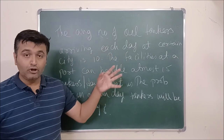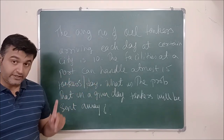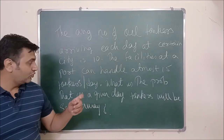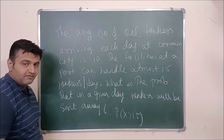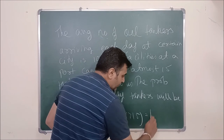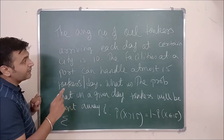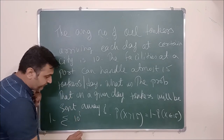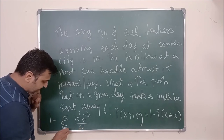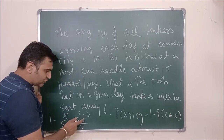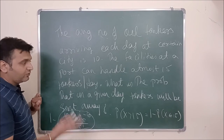Last question: the average number of oil tankers arriving each day at a certain port is 10. The facilities at the port can handle at most 15 tankers per day. What is the probability that on a given day tankers will be sent away? Tankers are sent away only if more than 15 arrive, so we need P(X > 15), which equals 1 minus P(X ≤ 15). Lambda is 10, and from the table with mean 10 and R equals 15, the cumulative value is 0.9513.